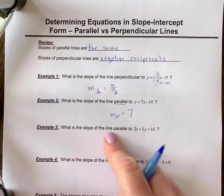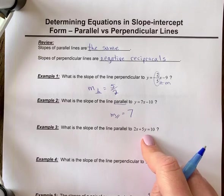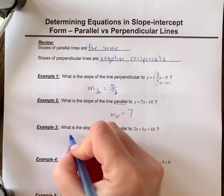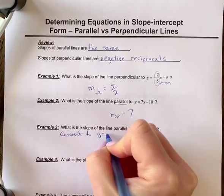Number 3, what is the slope of the line parallel to this? Well, for us to find the slope, it needs to be into y equals mx plus b form.